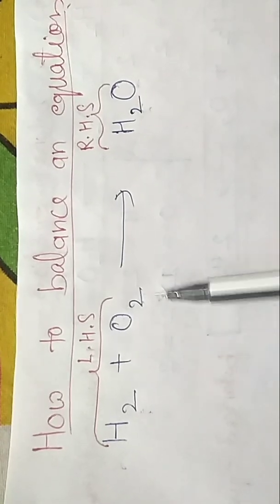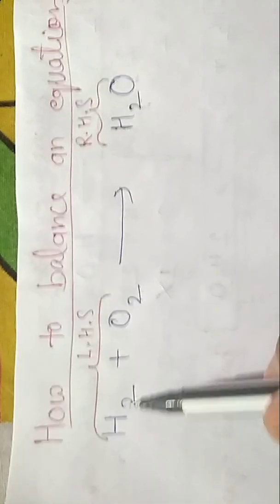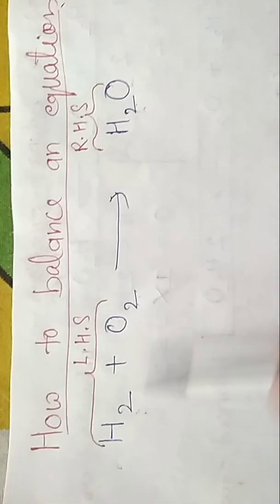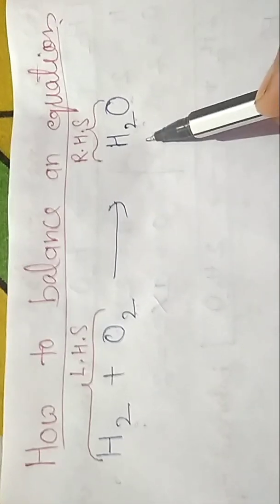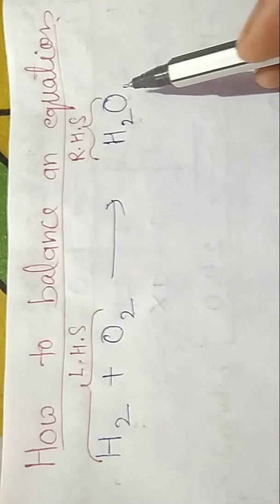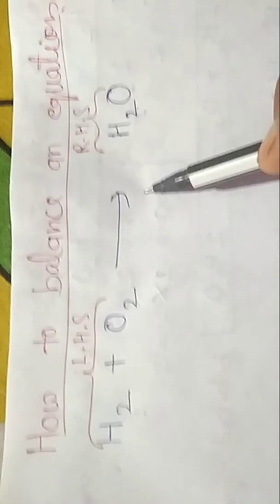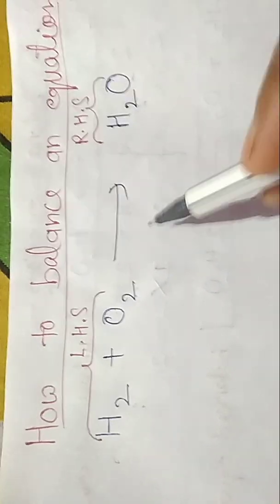Here you can see H2 has two hydrogen atoms and O2 has two oxygen atoms. In H2O, hydrogen atoms are two but oxygen atom is only one, so it is unbalanced.